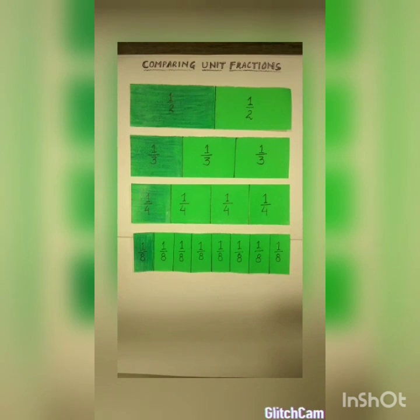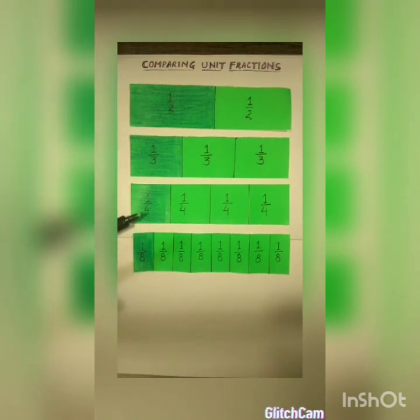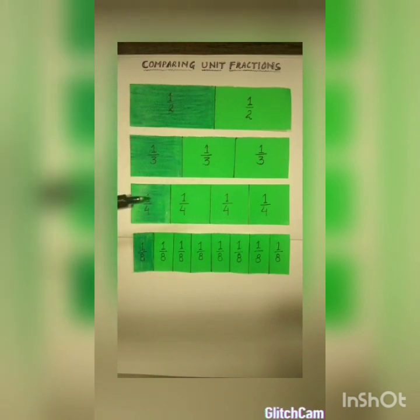Children, in each strip I have colored one part. Have you noticed something? One by two, one by three, one by four, and one by eight — all these are unit fractions. Because in these fractions, one is the numerator. So, these kinds of fractions are called unit fractions.